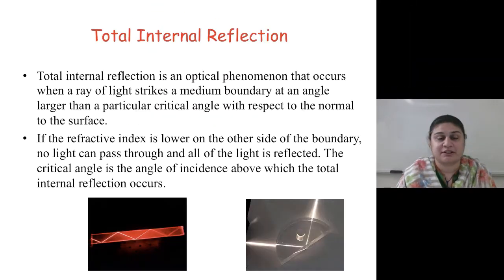Total internal reflection is an optical phenomenon that occurs when a ray of light strikes a medium boundary at an angle larger than a particular critical angle with respect to the normal to the surface.